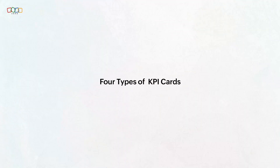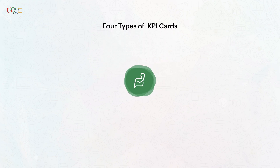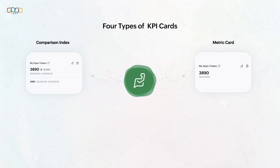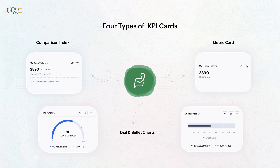Zoho Desk offers four types of KPI cards: comparison index card, metric card, dial card, and bullet chart card. Let's understand each one separately.